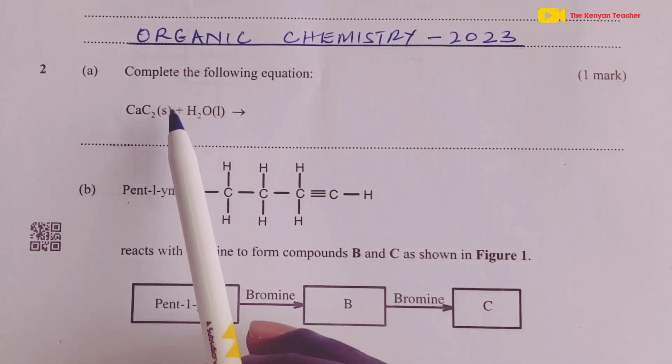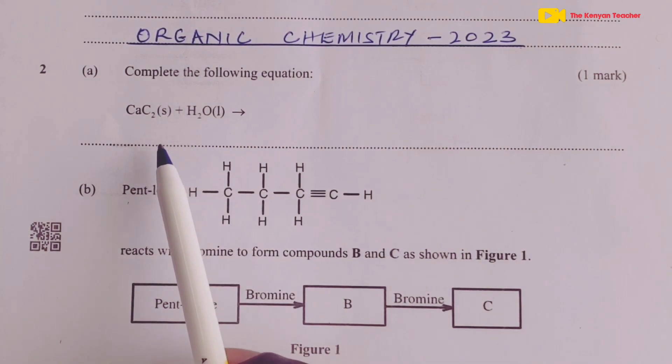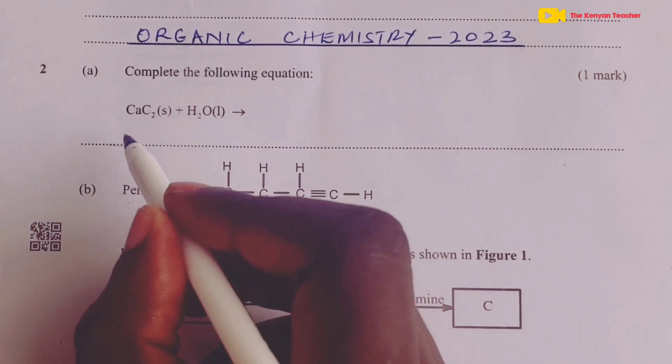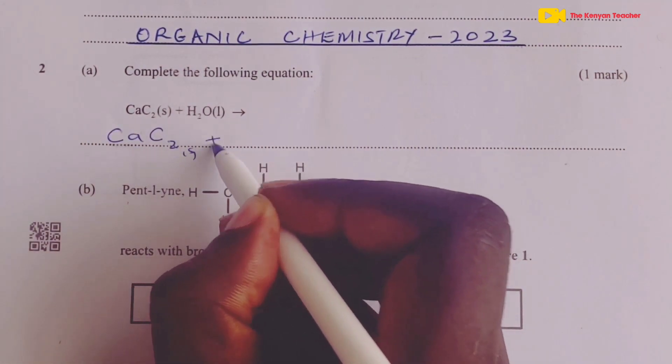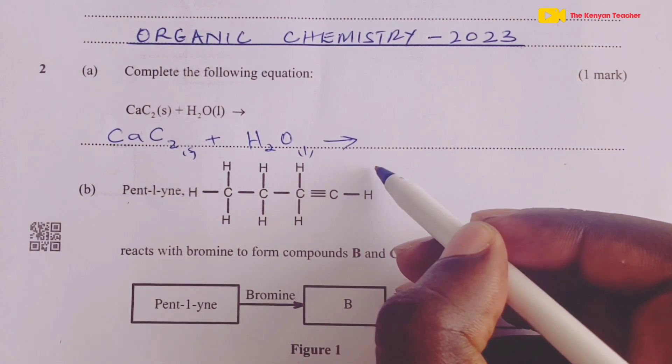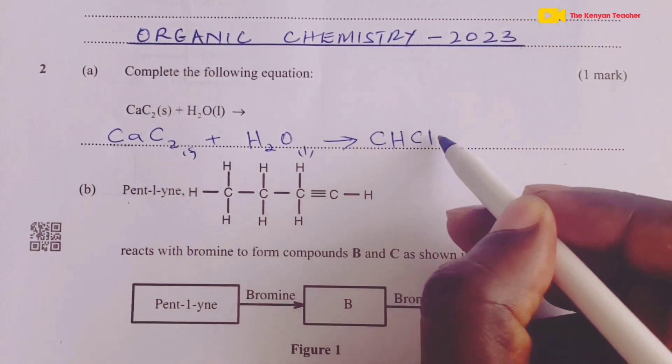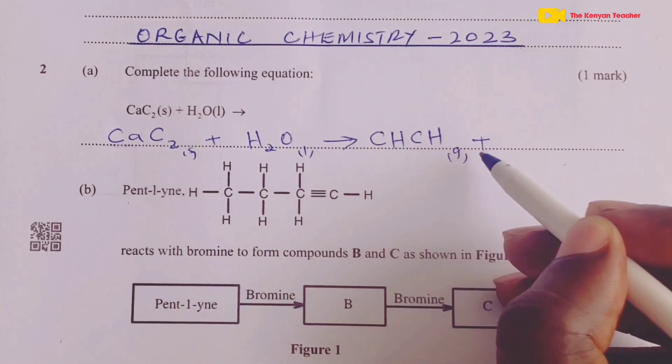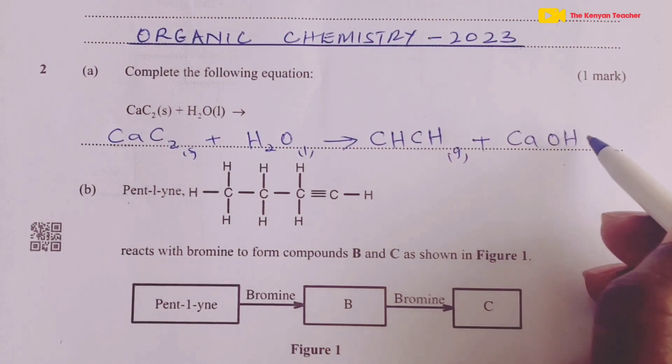The candidates were asked to complete the equation in which calcium carbide in solid state is reacting with water. This is the equation for the reaction that is normally used to prepare the first member of the alkyne family. The name is ethyne. Calcium carbide in solid state would react with water in liquid state and then we obtain the first member of the alkyne family, which we call ethyne.